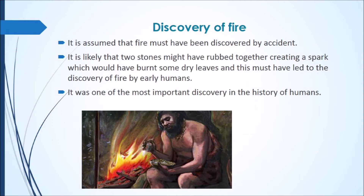Now let us see how the early humans discovered fire. It is assumed — that is, guessed or believed — that fire must have been discovered by accident. It is likely that early humans would have rubbed two stones together, a spark would have been created and burned the dry leaves. This is what led to the discovery of fire, which was one of the most important discoveries in human history.